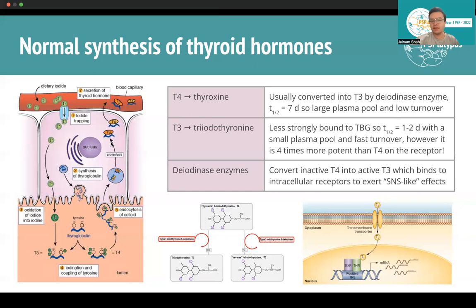They enter the blood and then go to whatever tissue they need to exert their actions. The steps I want you to really know are the iodination step as well as the proteolysis step, because that's where a lot of these mechanisms of action are relevant. Looking at T4 and T3 — the main hormones produced by the gland — T4 is thyroxine, generally the inactive form, converted into T3 by the diodinase enzyme, which I'll discuss in a sec. It has the longer half-life.